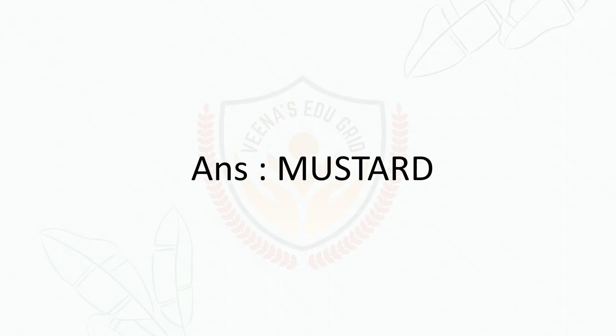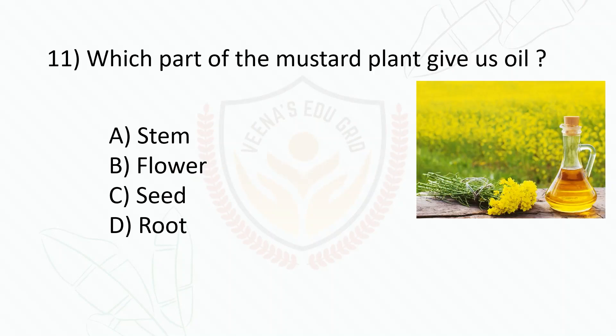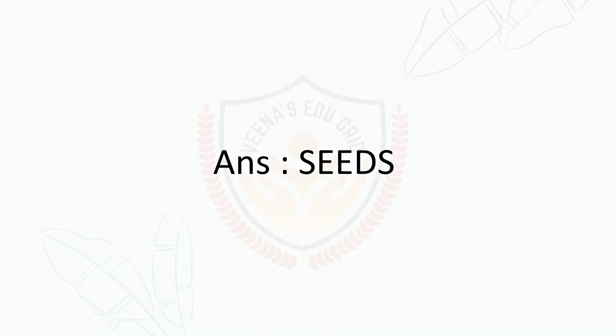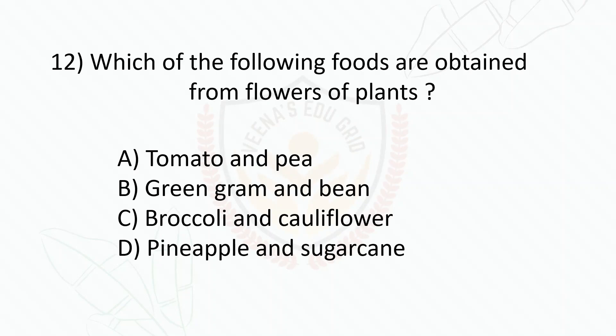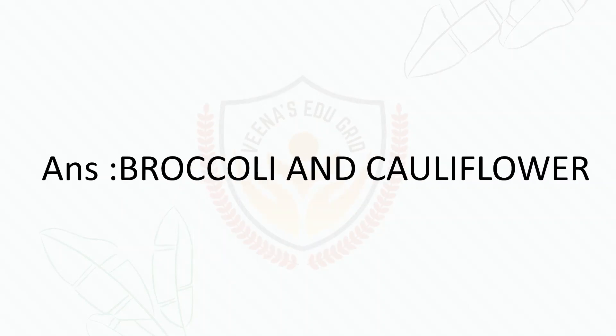Which part of the mustard plant gives us oil: stem, flower, seed, or root? The answer is seed. Which of the following foods are obtained from flowers of plants: tomato and pea, green gram and bean, broccoli and cauliflower, or pineapple and sugar? The answer is broccoli and cauliflower.